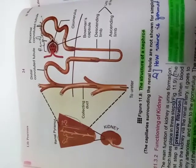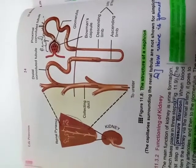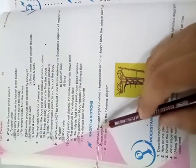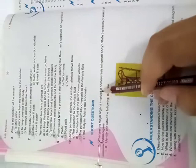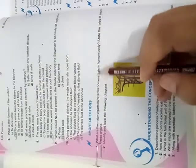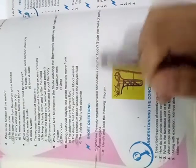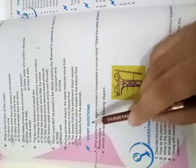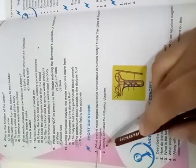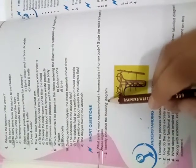Now let's go to the exercise questions. This is our exercise, page number 30. Short question number 1: What are the major organs involved in homeostasis in the human body? State the roles of each of these organs. Short question number 2: Identify and label the following diagram — this diagram is of the glomerulus and the Bowman's capsule, and this one is the whole nephron.